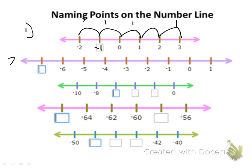The next one here — we have to fill in this blank after the negative 6. I look at my number line and I can see that the interval, or the space, is 1, and that it's decreasing by 1. So from negative 6, I would fill this space in with negative 7.